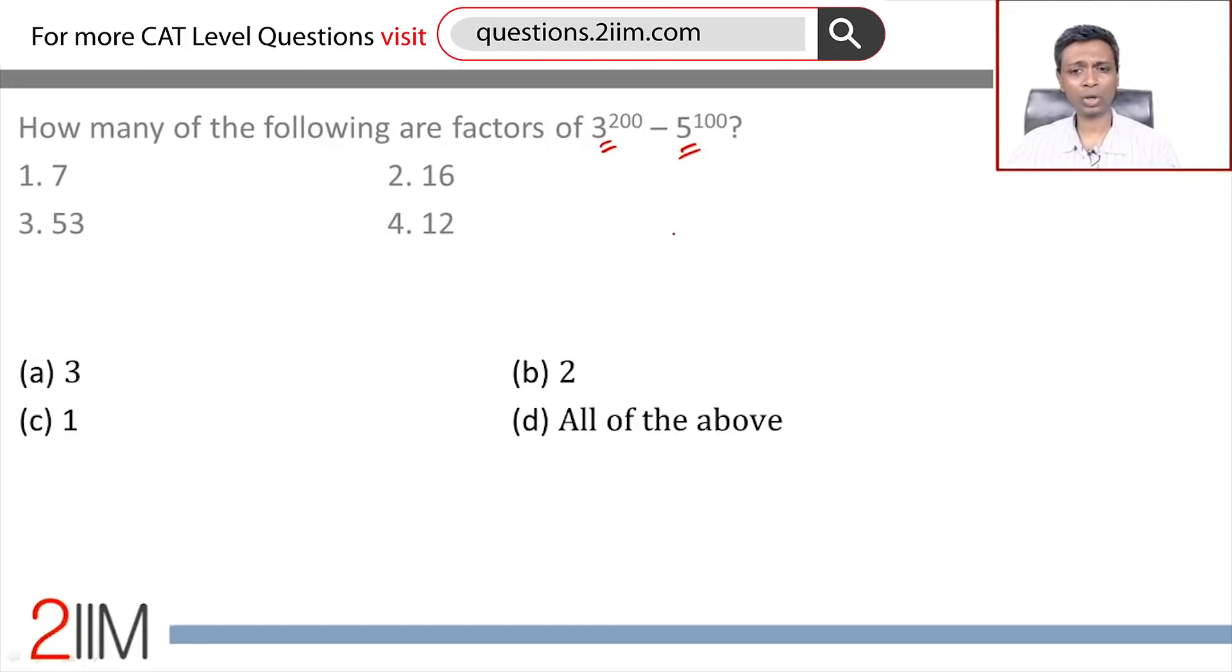Let us simplify this. 3^200 is 9^100. I will write this as 9^100 - 5^100, the form a^n - b^n. So this will definitely be a multiple of a - b. That will be a multiple of 4.